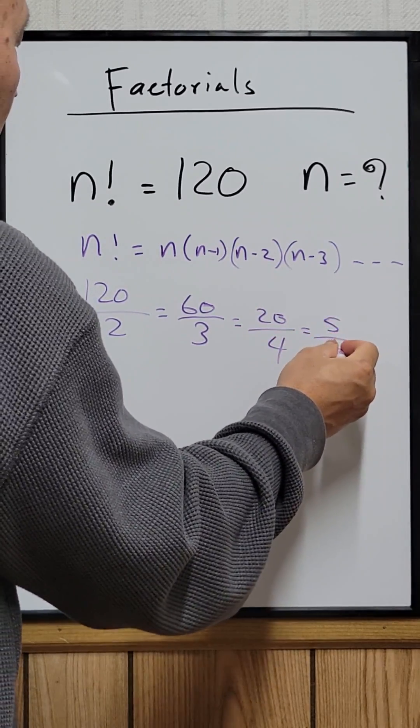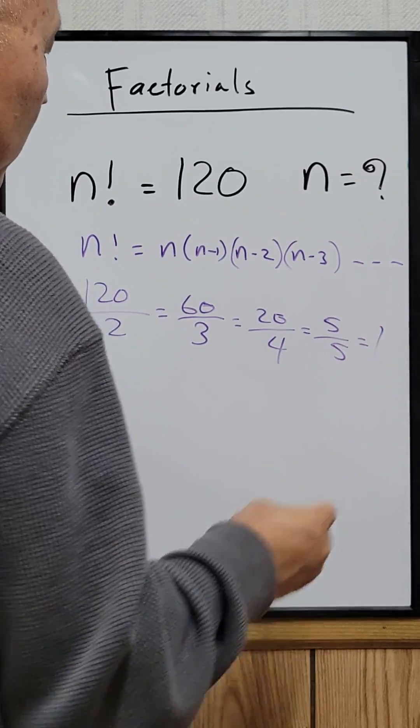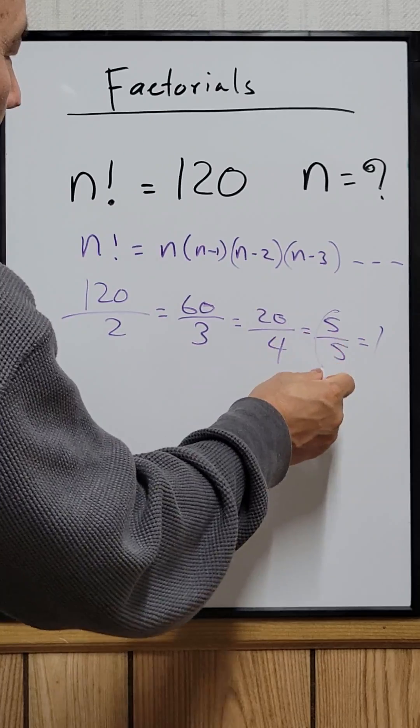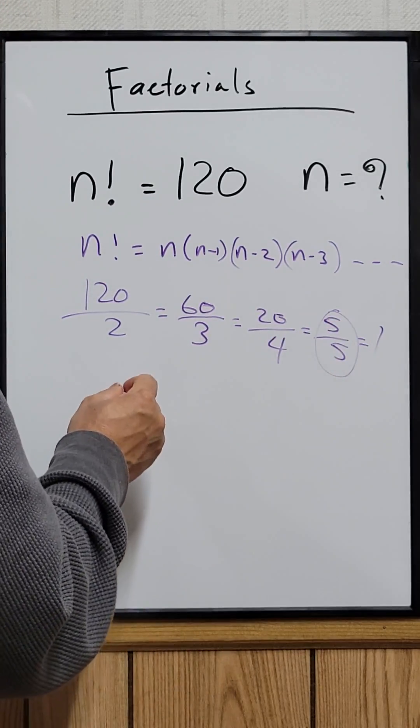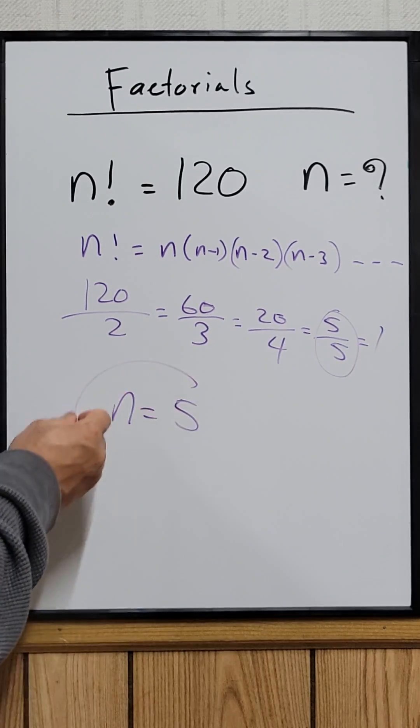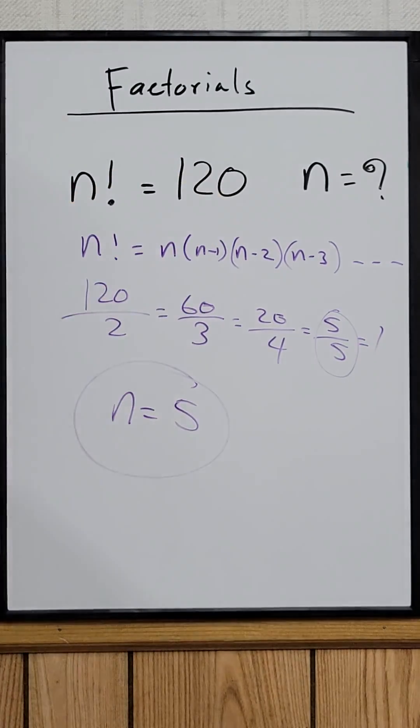equals 5, 5 divided by 5 equals 1. So when I reach 1 that means this is the number right here, the 5 is equal to n. So n equals 5. That's how you solve this problem.